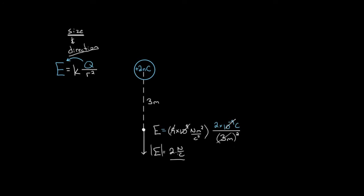That gives us the magnitude of the electric field. To get the direction, we ask what was creating this field — a positive charge. Positive charges always create fields that point radially away from them, and at the point three meters below, radially away points straight down. So we have an electric field of two newtons per coulomb pointing straight down.